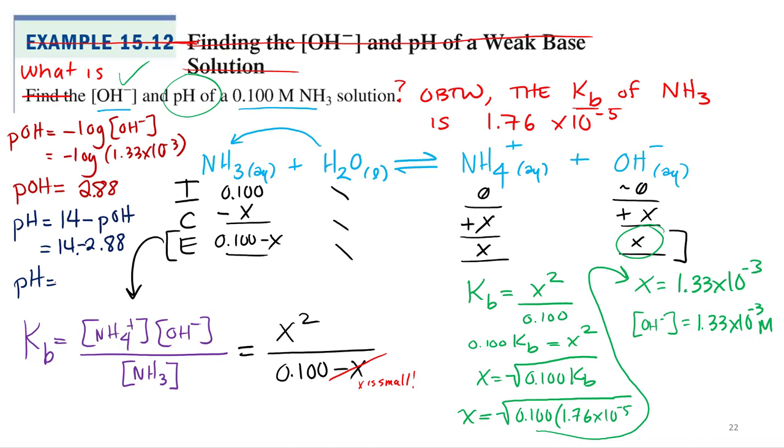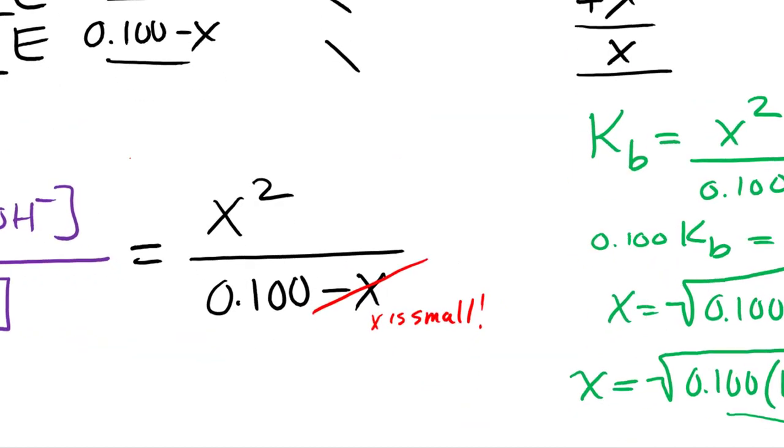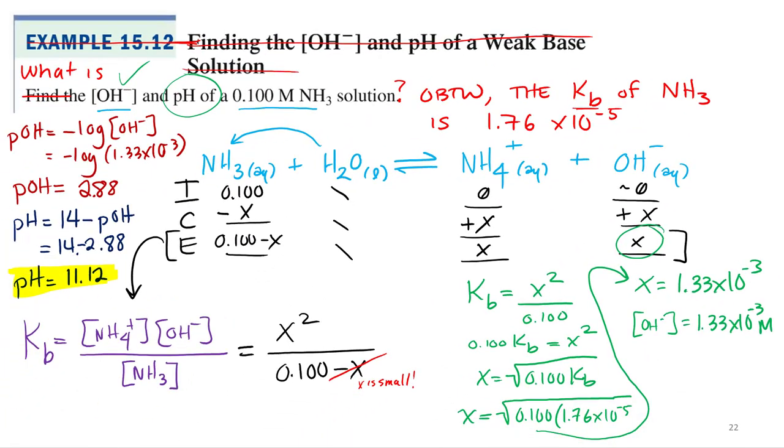11.12. Should we highlight it? It's highlighted. I went through three sig figs here for 2.88 and then I cut the decimals for the subtraction. I would have accepted 11.1 or 11.2.